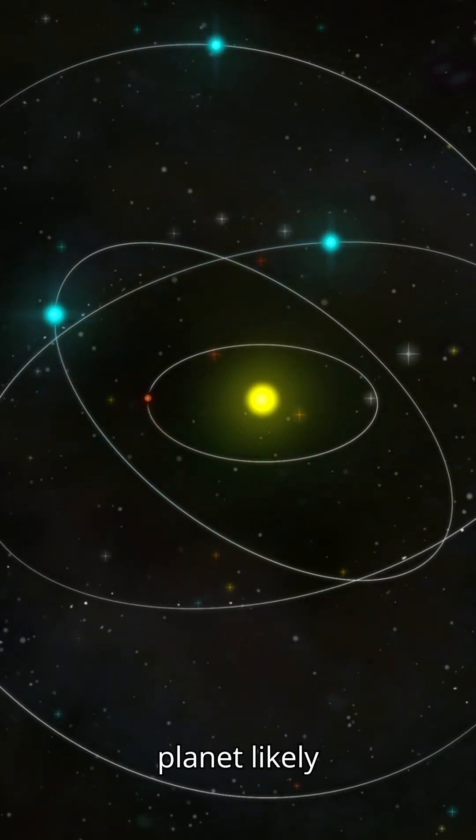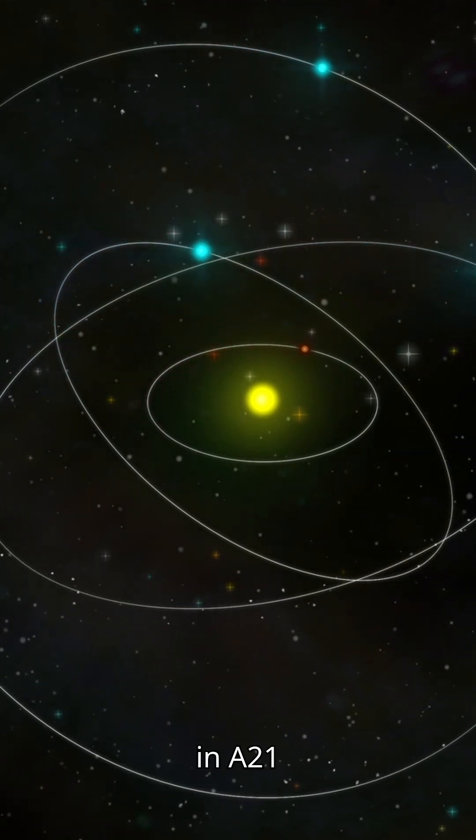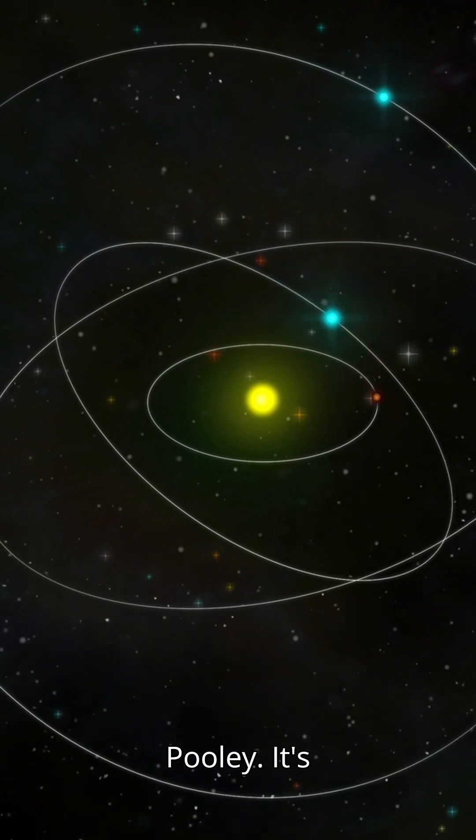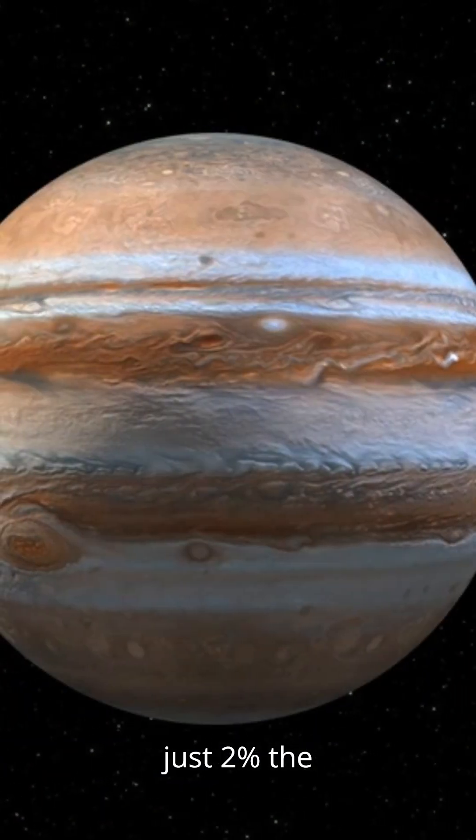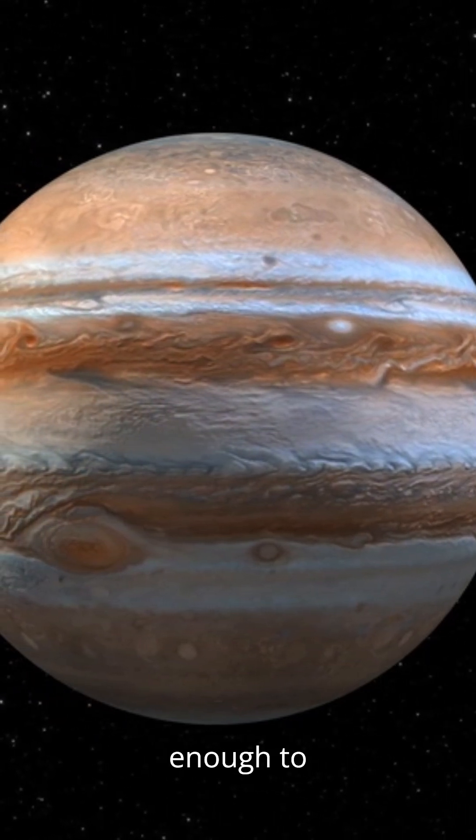This hidden planet likely orbits with a 6.4-day cycle in a 2-1 resonance with Puli. It's just 2% the mass of Jupiter. Tiny, but powerful enough to create detectable ripples in Puli's motion.